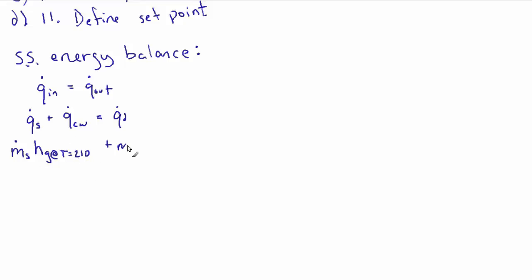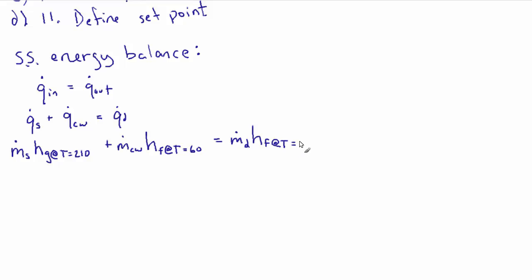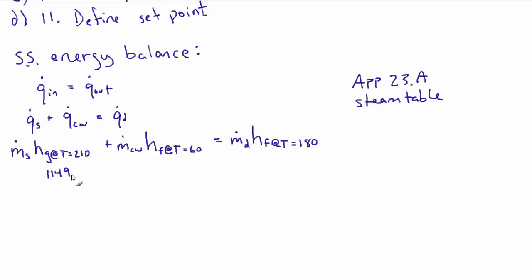H_G, H_F at 60°F, and H_F at 180°F can all be looked up in the steam table. H_G is 1149.5 BTU per pound, the 60-degree cold water is 28.08, and the 180-degree water is 148.04. We know the mass flow rate coming out is 30 pounds per minute, but we don't know the mass flow rates of cold water or steam. We're trying to find how many seconds per minute the valve should be open to maintain the tank output at 180 degrees.